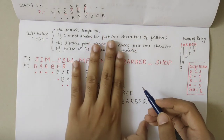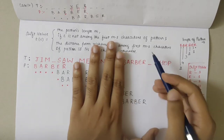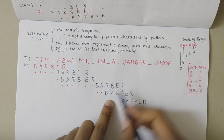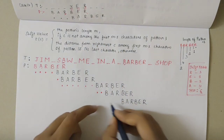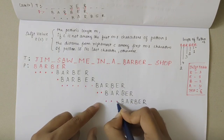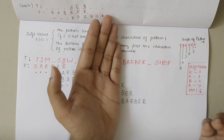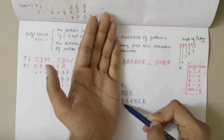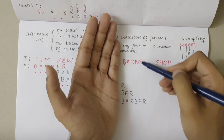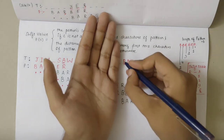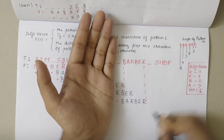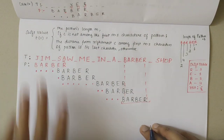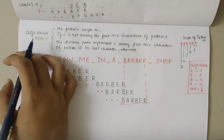Next I have R here. R and R are the same. Then I have A and E — not the same. I check if A is occurring in the pattern: yes, for A the shift value is 4, so I do 4 shifts. After 4 shifts, the entire pattern aligns: B and B are aligned, A and A are aligned, R, B, E, and R are all aligned. This implies I have found the required pattern in the text. That was the worked example of the Horsepool algorithm.